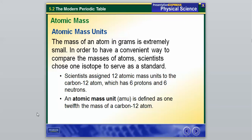And hopefully we can kind of figure that out based off the fact of watching the video about how small an atom actually is. And in order to have a convenient way to compare the masses of atoms, scientists chose one isotope to serve as a standard. So remember an isotope, they have different numbers of neutrons in their nucleus. And so there is one isotope that they're going to use to kind of compare to every other isotope when we talk about figuring out what their mass is. So scientists assigned 12 atomic mass units to the carbon-12 atom because it has 6 protons and 6 neutrons.